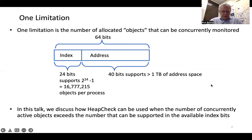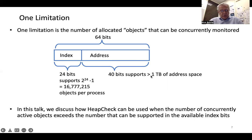One limitation of this approach is in the number of allocated objects that can be concurrently active. If we have a 64-bit pointer and we use 24 bits for the index information into our bounds table, and the other 40 bits as real addressing information, that allows us to support one terabyte of address space and up to 2^24 minus 1 active objects in a process. So in this talk, we discuss how HeapCheck can be used when the number of concurrently active objects exceeds the number that can be supported in the available index bits.